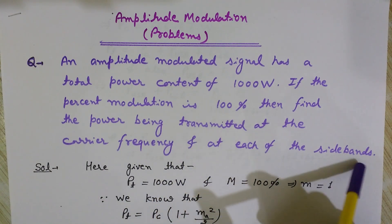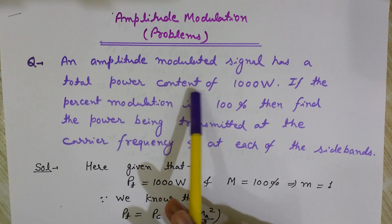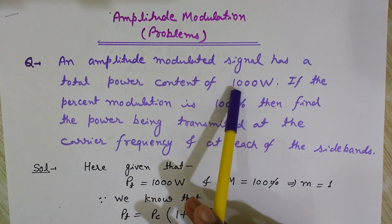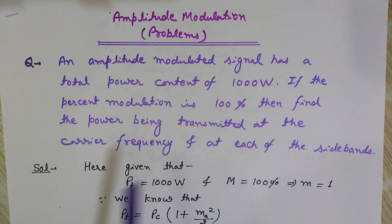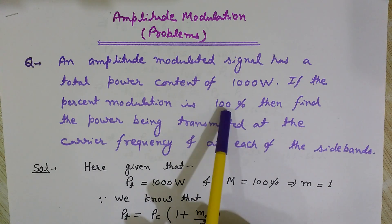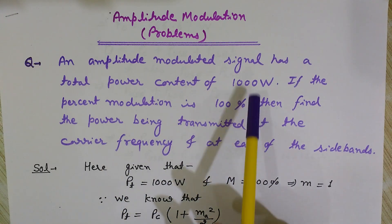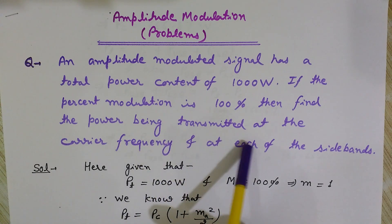As we know, an amplitude modulated signal has three parts: the carrier wave, the upper sideband, and the lower sideband. The total power of the AM wave is 1000 watts. The percent modulation is 100%, which means M — the modulation index — equals 1. We need to find the power being transmitted at the carrier frequency and at each sideband.